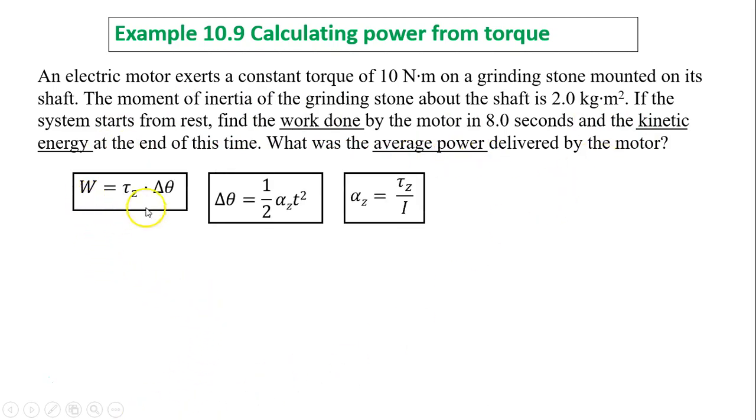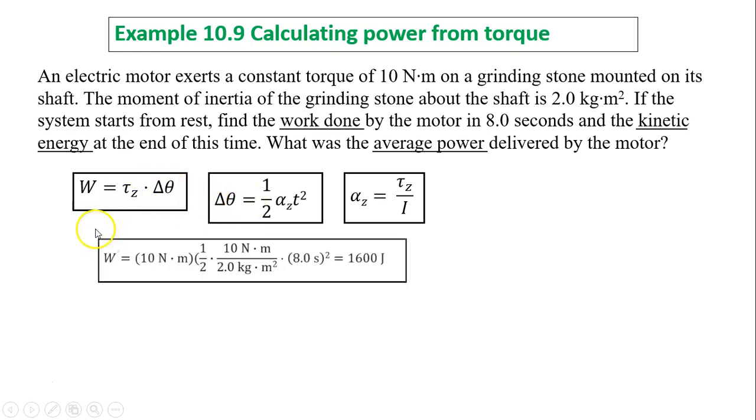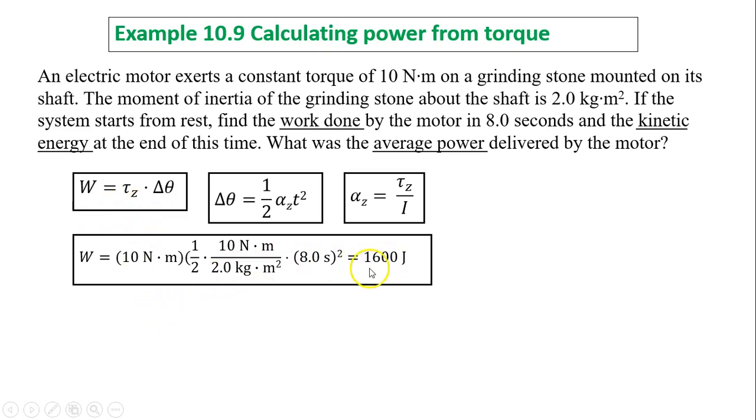So let's take a look. Work equals torque times the angular displacement. Since you start from rest, angular displacement is one-half alpha z times t squared. Alpha z is torque divided by I. We know torque is 10, I is 2, so alpha is 5. t is 8. So one-half times 5 times 8 squared gives you delta theta. Then you plug delta theta and torque z in. You will have 1600 joules. That is the work done.